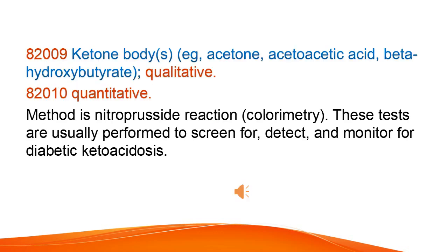Ketone bodies — e.g., acetone, acetoacetic acid, beta-hydroxybutyrate — can be measured qualitatively or quantitatively. The quantitative method is the nitroprusside reaction and colorimetry. These tests are usually performed to screen for, detect, and monitor for diabetic ketoacidosis.